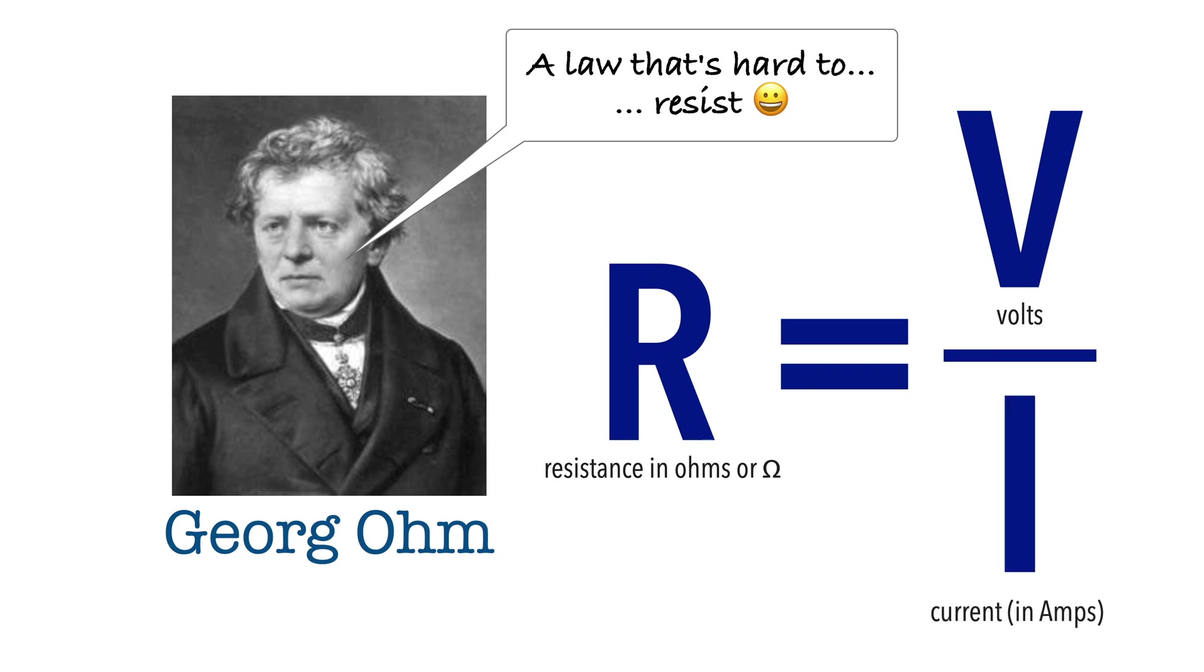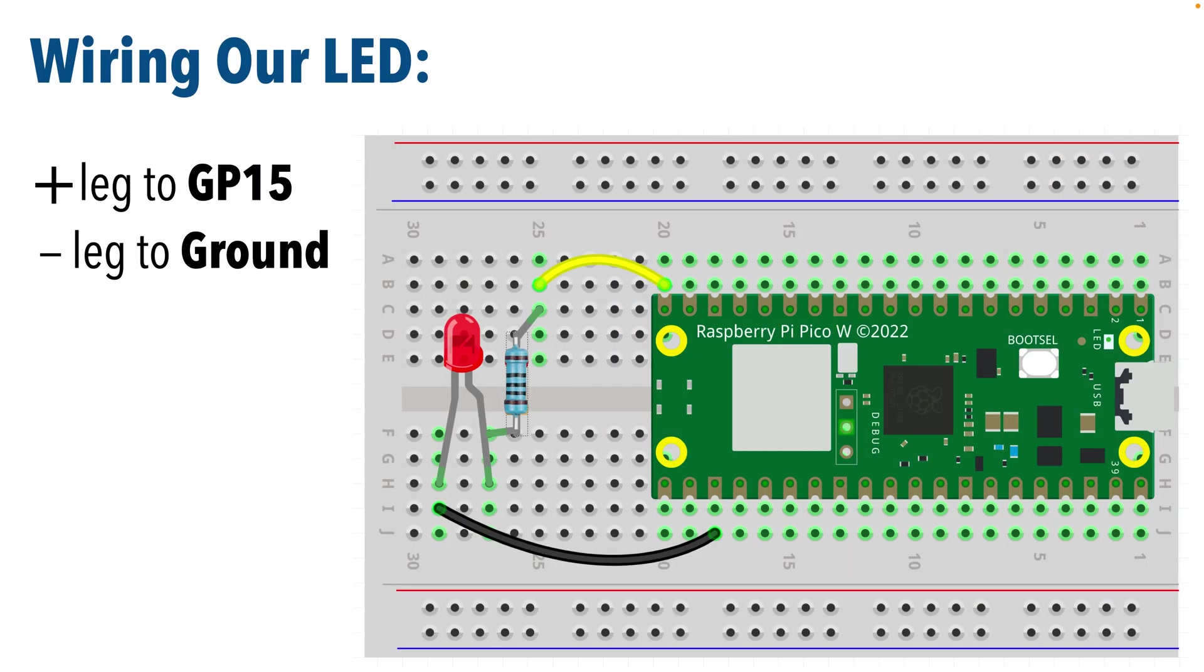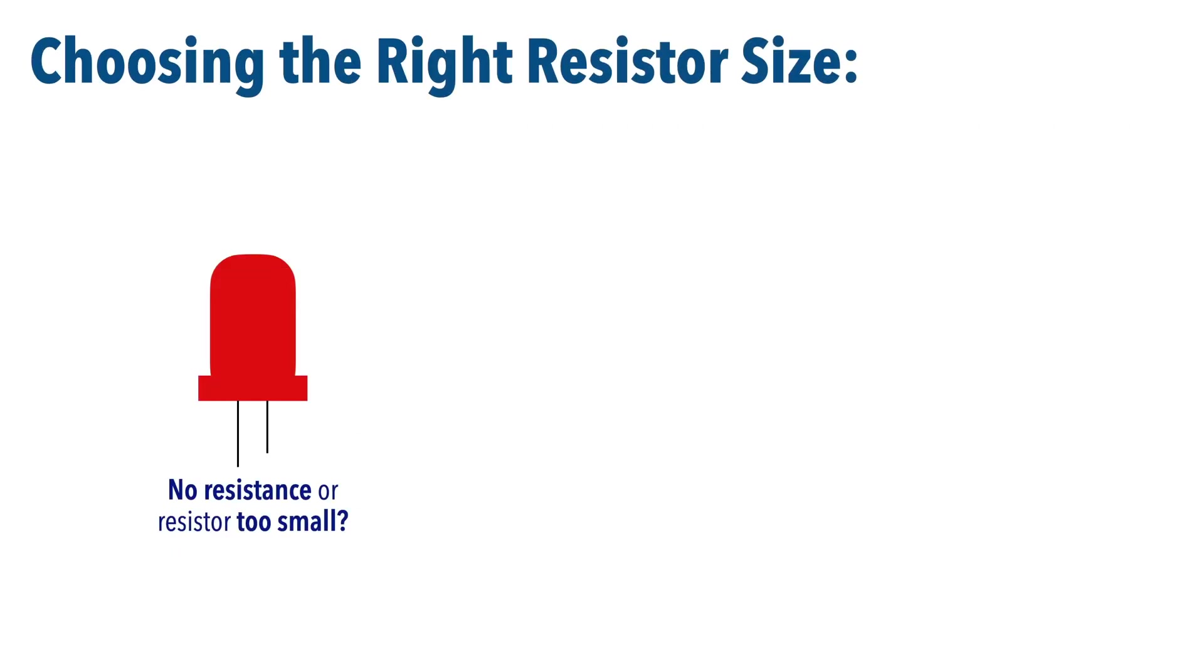And the same principles used here should apply when calculating resistor values for other projects where a single LED is connected to a GPIO pin. Now, without getting too deep into the weeds of electrical theory, we use a resistor on an LED component because if we supply too much electricity, the bulb might burn out, or the LED might have a much shorter life. In fact, even if we use a resistor, but the resistor's far smaller than we need, we can still have these problems.